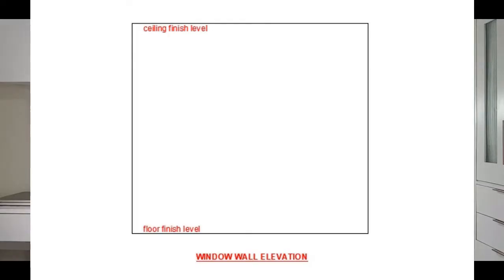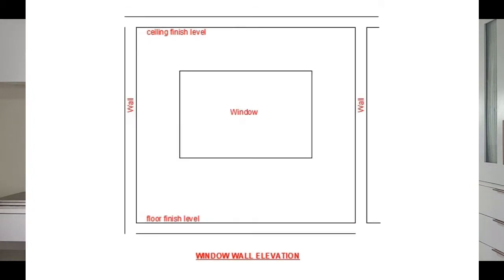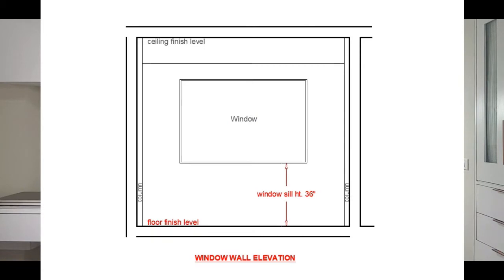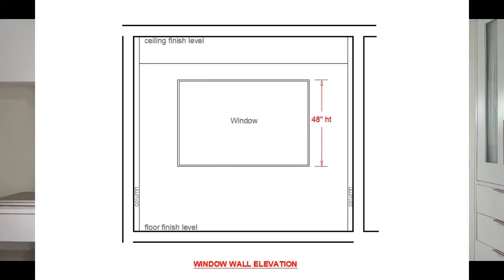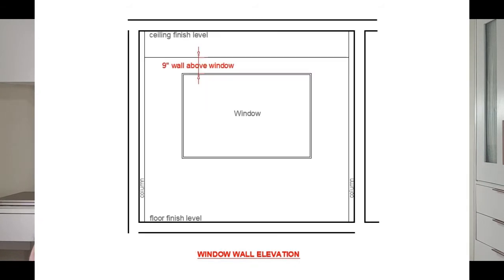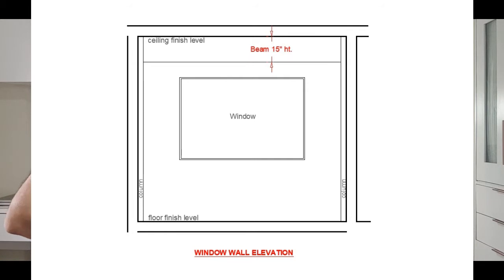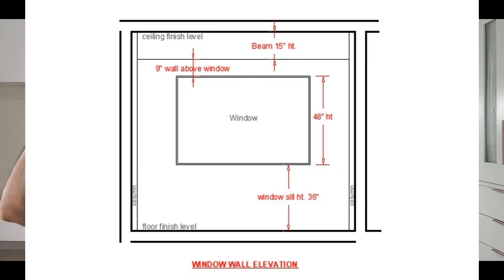That was the plan. Now make a sketch of each of the four walls — again, draw a rectangle. If there is a window on the wall, sketch it. Measure the height of the window sill from the floor finish, the height of the window from bottom to top, and the height from the top of the window to the bottom of the beam if there is a beam projection. Also measure the depth and projection of the beam and its height to the ceiling. If there is no projected beam, measure from the top of the window directly to the ceiling and write it down.